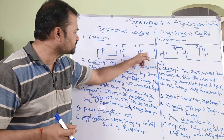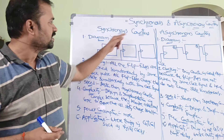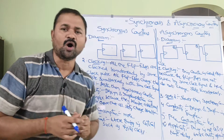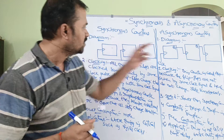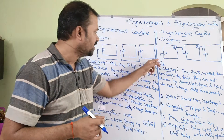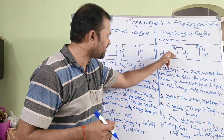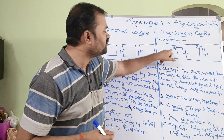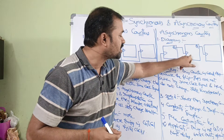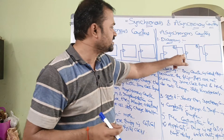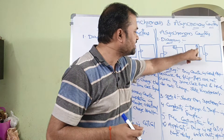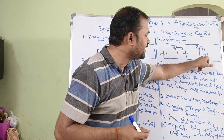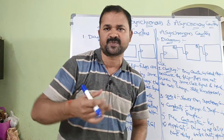Here we have three flip-flops, and this is the clock pulse. In a synchronous counter, the same clock pulse is applied on all the flip-flops simultaneously. In an asynchronous counter, the clock pulse is applied only to the first flip-flop. The output Q of the first flip-flop is connected as the clock pulse to the second flip-flop, and the output of the second flip-flop is connected as the clock pulse to the third flip-flop, and so on.